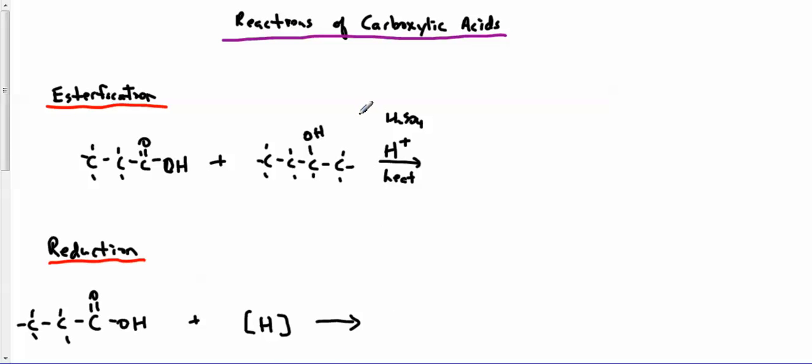All right, let's talk about reactions of carboxylic acids. Carboxylic acids are used in a process called esterification. I react this carboxylic acid with an alcohol. I need catalysts like H2SO4, which is giving me H+. I need to heat this.